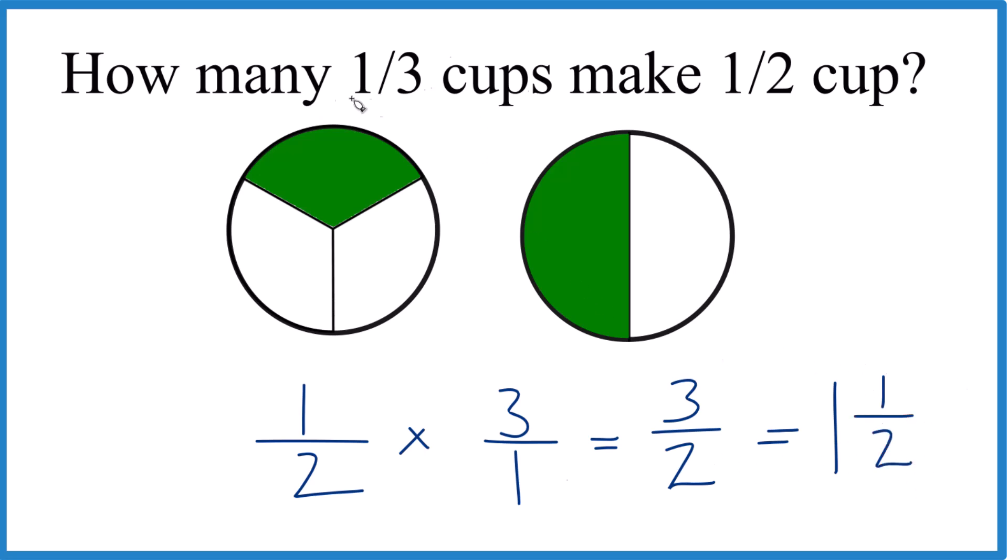So we can say that one-and-one-third cups, this piece right here, we need one-and-a-half of these to equal this half cup over here.